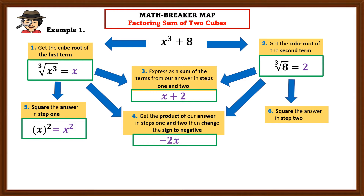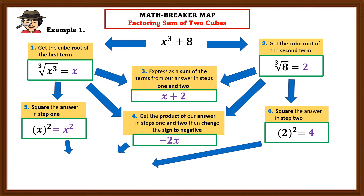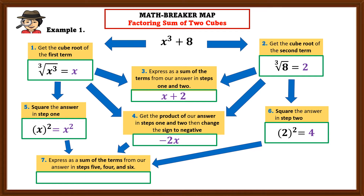Step 6 is to square the answer in step 2: 2 squared, meaning 2 times 2, equals 4. Step 7 is to express as a sum of the terms from steps 5, 4, and 6. We write this as the trinomial expression x² − 2x + 4.